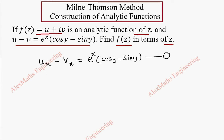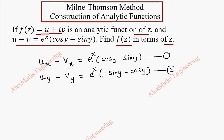In the same way, we partially differentiate with respect to y. So uy minus vy equals e^x (which is constant, kept as it is), and the derivative gives minus sin y and minus cos y. This is our second expression.